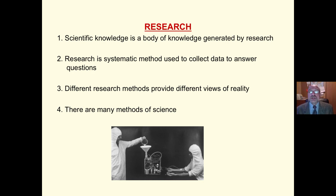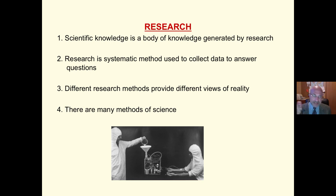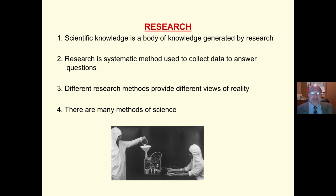Scientific knowledge is a body of knowledge that is generated by research. Research is any systematic inquiry used to collect data to answer questions. Now, there is not one scientific method with control and experimental groups — there are many different methods. There are as many different types of methods as there are questions, and the different research methods provide different ways to view reality.